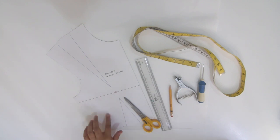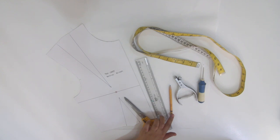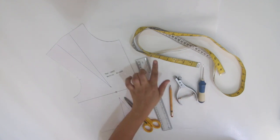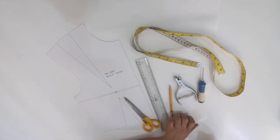We would need a two dart bodice block that fits you, a dress form or your client, paper scissors, ruler, pencil and eraser, a pattern notcher, an awl punch which is optional, tape measure, and a pattern paper or tracing paper.